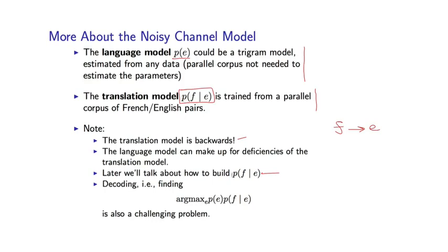Next in this class, we'll talk about how to build this model of F given E. And then finally, we're going to be left with this problem of, for a given French sentence F, finding the English sentence that maximizes the product of these terms. This is also a very challenging problem. We're searching over a very large set of possible translations. So we'll talk a lot about this problem a little later in the class.